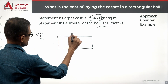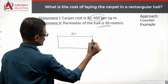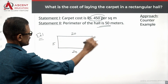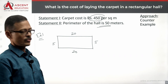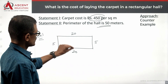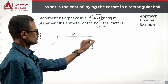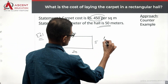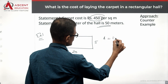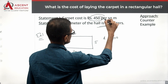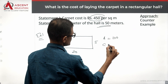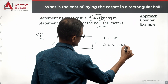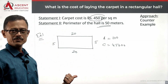For a rectangle with perimeter 50, consider length = 20 and width = 5. Then 2×20 + 2×5 = 50, which checks out. The area is 20×5 = 100 square meters. The cost would be 450 × 100 = 45,000 rupees. This is one example.